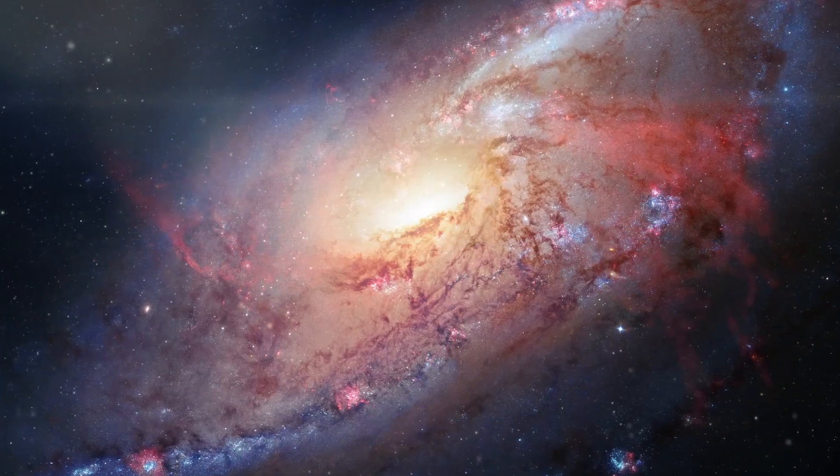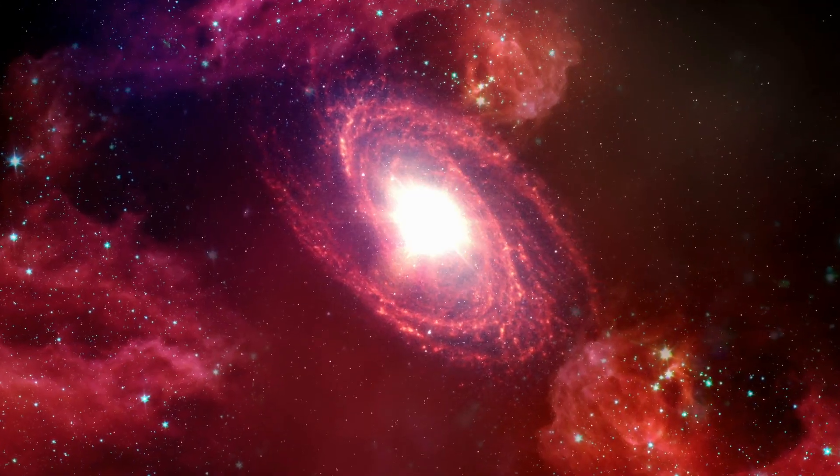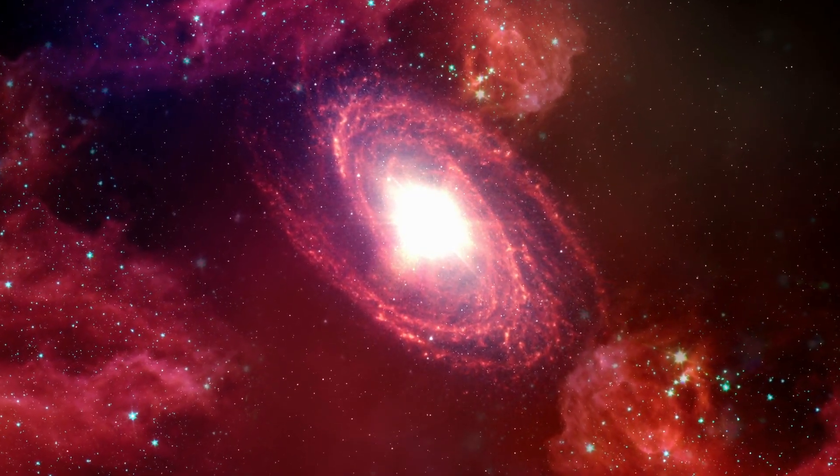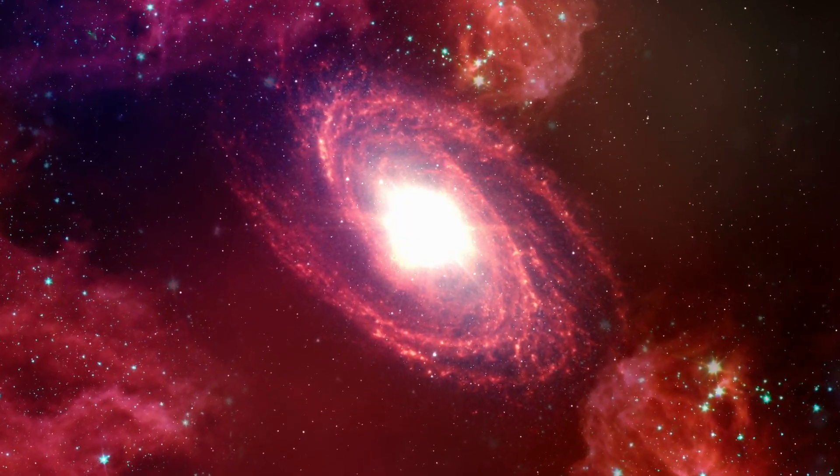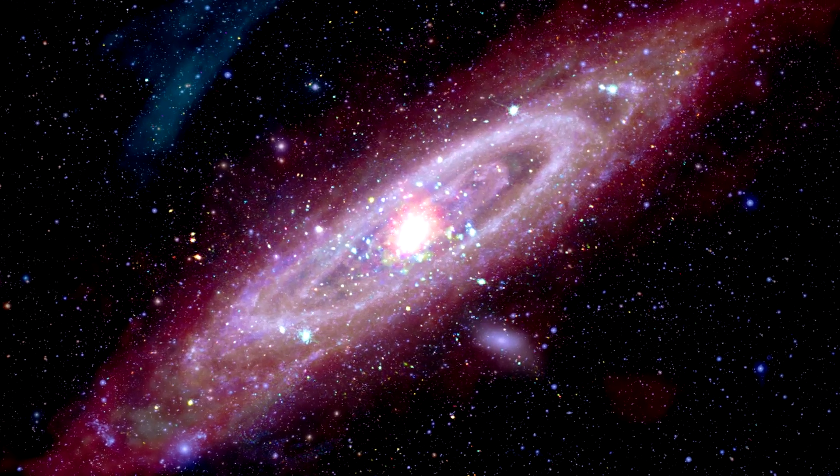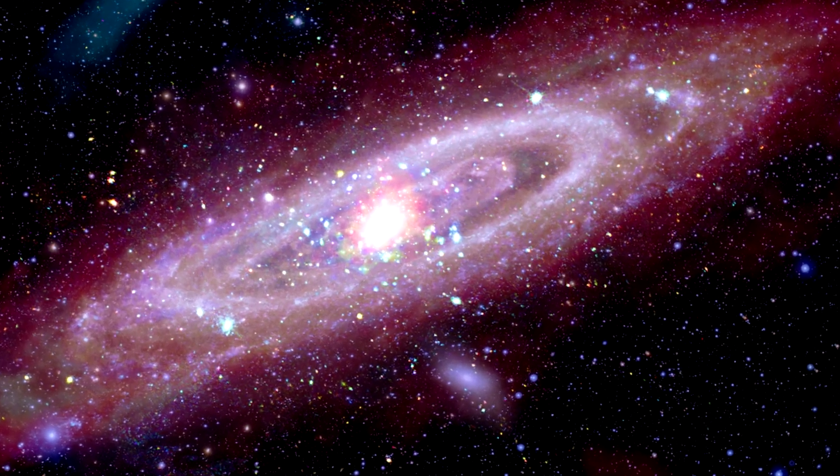Most galaxies at this redshift are barely starting to come together. They look like loose collections of gas clouds or disorganized clumps of stars. But this galaxy looks mature, stable, ordered. It's almost like it skipped adolescence and went straight into adulthood.